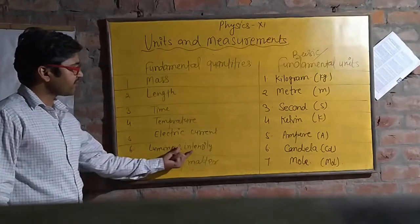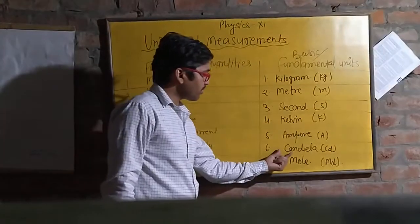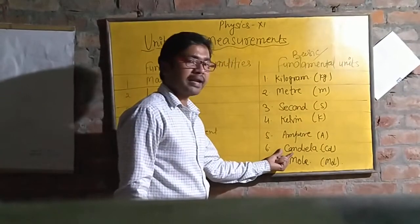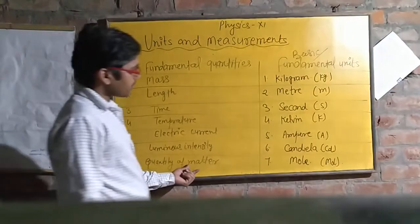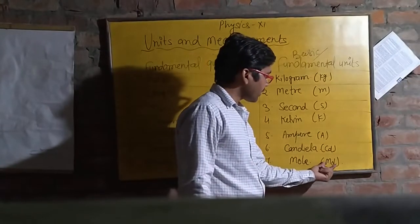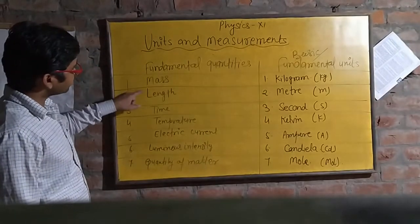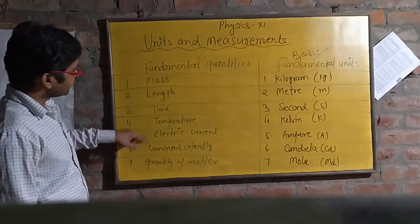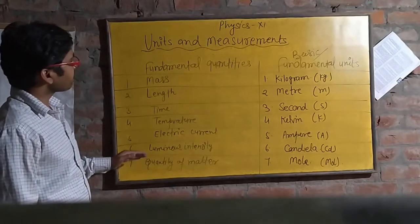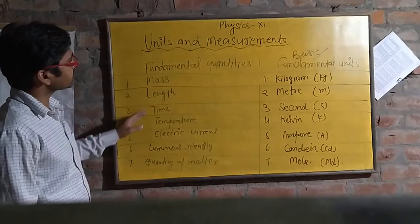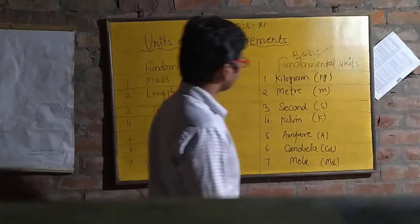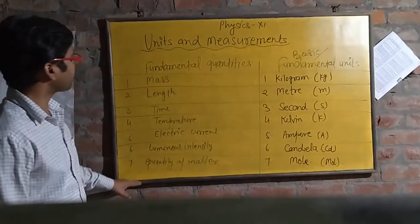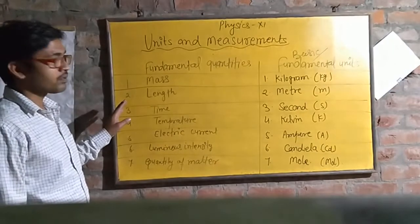Fifth one is electric current — it is a fundamental quantity and its unit is ampere, in short A. Sixth one is luminous intensity — its unit is candela. Last one is quantity of matter — its unit is mole, in short mol. These seven quantities are independent of each other, so they are known as fundamental quantities. This table of seven fundamental quantities and their basic units is very important for further study.